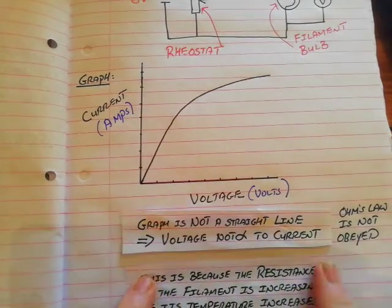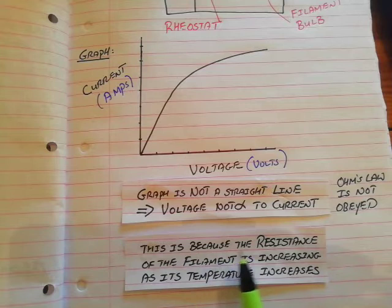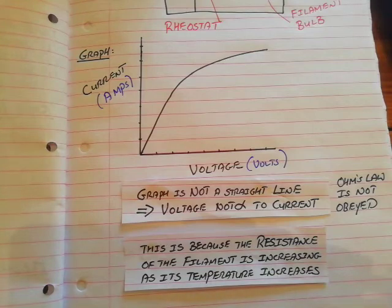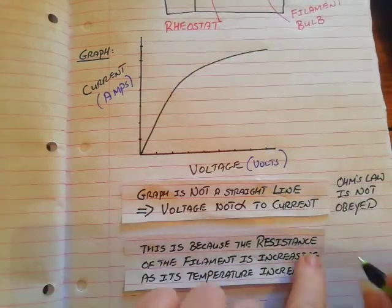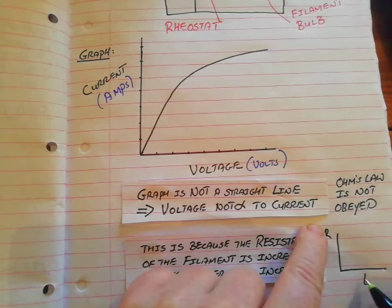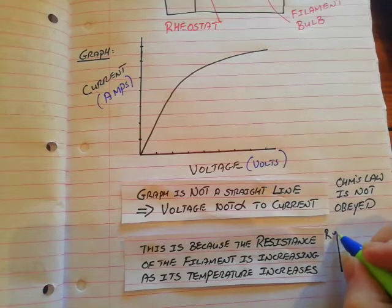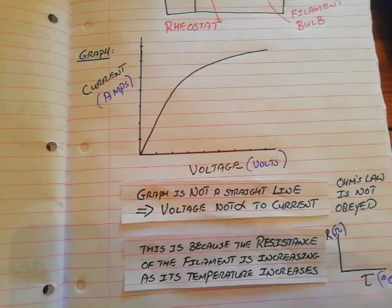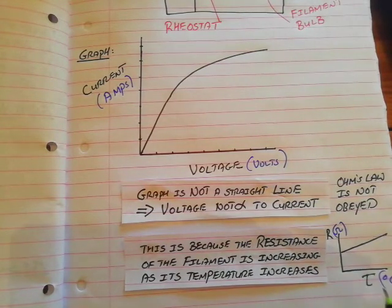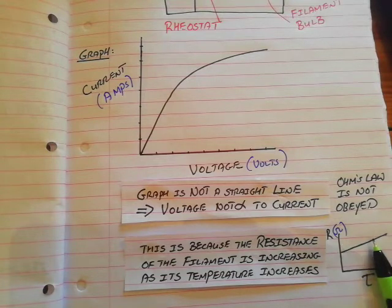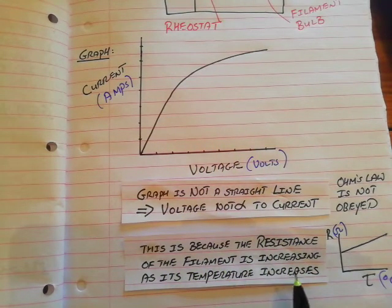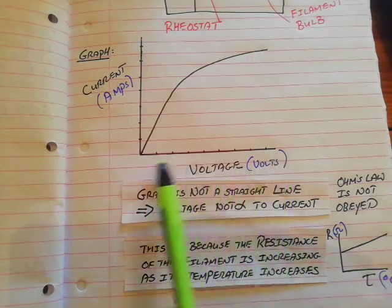And that's the reason that we get a curved graph. The reason we get a curved graph is because the resistance of the wire, the resistance of the filament, is increasing as its temperature increases. Please remember that if you have the resistance and temperature, if you're plotting those two things about a wire, resistance in ohms, temperature in degrees Celsius, that as the temperature of a wire increases, so does its resistance. And that's the reason that this graph is curving, because the resistance of the filament is increasing as its temperature increases.